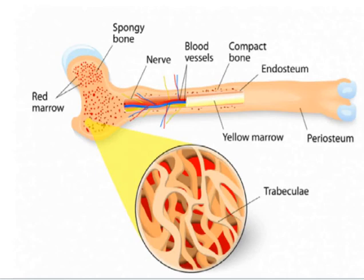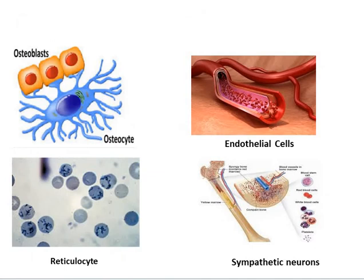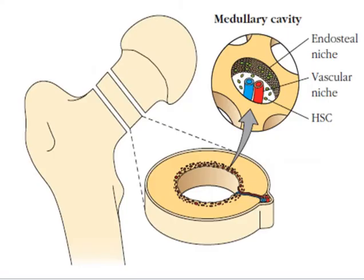The adult bone marrow contains several cell types that coordinate hematopoietic stem cell development, including osteoblasts, endothelial cells, reticular cells, and sympathetic neurons. Osteoblasts are versatile cells that both generate bone and control the differentiation of hematopoietic stem cells. Endothelial cells lining blood vessels also regulate hematopoietic stem cell differentiation. Reticular cells send processes connecting cells to bone and blood vessels, and sympathetic neurons can control the release of hematopoietic cells from the bone marrow.